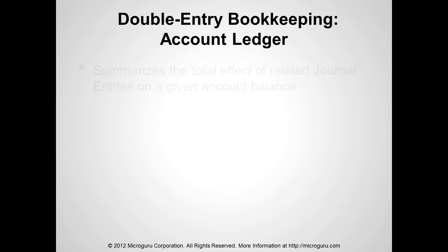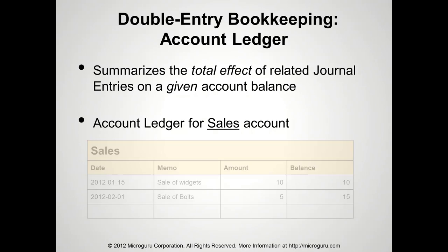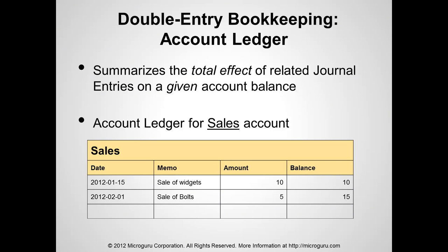Let's look at the account ledger next. An account ledger summarizes the total effect of all related journal entries on a given account balance. For example, for a sales account, we see a date, memo, amount posted, and running balance. On January 15, 2012, we had sales of widgets for $10, giving total sales of $10. On February 1st, we had sales of bolts for $5, giving a running balance of $15 for sales.